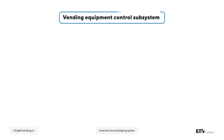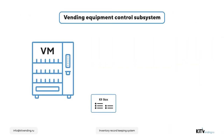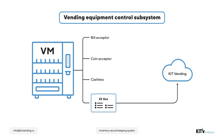The equipment control subsystem: the Kitbox telemetry controller, implemented into the vending machine, sends technical data about the machine's equipment — such as cash acceptors and wireless payment systems serial numbers — to the Kit Vending server. This prevents personnel from replacing the original expensive equipment with something else.